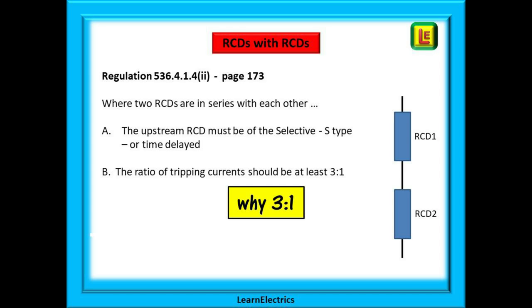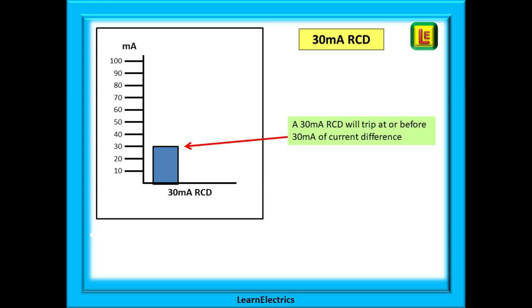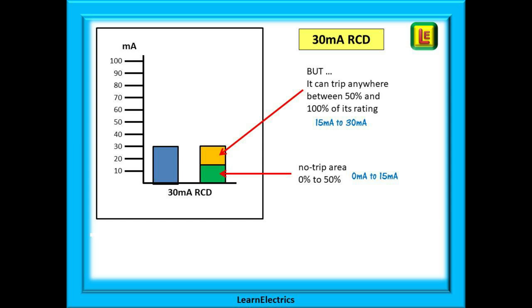But why choose a ratio of 3 to 1? If we look at a 30 milliamp RCD we know that it will operate when the residual current approaches 30 milliamps. The RCD is designed to operate anywhere between 50 percent and 100 percent of its rating which means that for a 30 milliamp RCD it could trip anywhere between 15 milliamps and 30 milliamps.